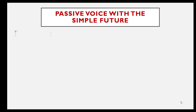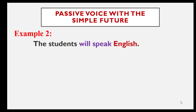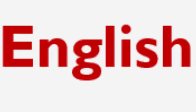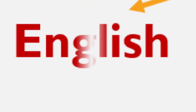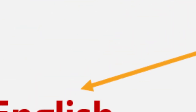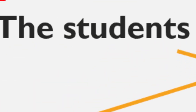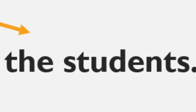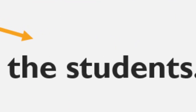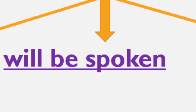Example number two: The students will speak English. English becomes the subject and the students become the object. We add be plus the past participle of speak, which is spoken. So the answer is: English will be spoken by the students.